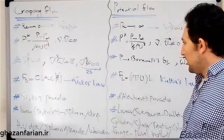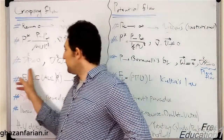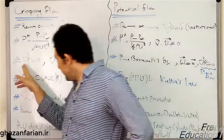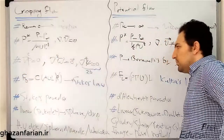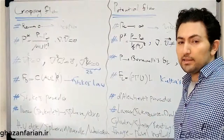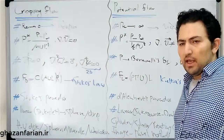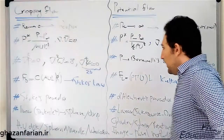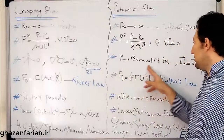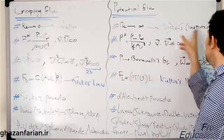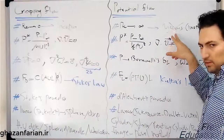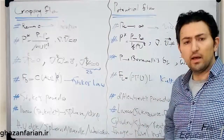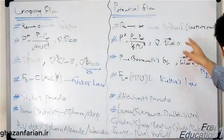Regarding governing equations: in creeping flow, the governing equation for pressure is the Laplace equation — the Laplacian of pressure equals zero. This is obtained by neglecting the inertia terms in the Navier-Stokes equation and taking the divergence of both sides. In potential flow, pressure is obtained from the Bernoulli equation because the flow is irrotational — though viscous potential flows do exist.